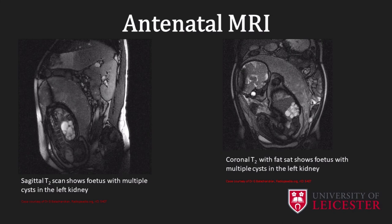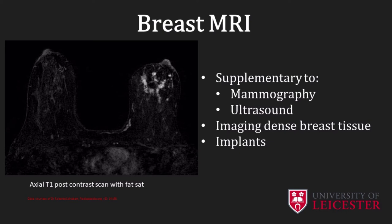Antenatal MRI can be carried out. T2 weighted sagittal and coronal images in this slide clearly show multiple cysts in the left fetal kidney. MRI scans of the breast can be acquired to provide supplementary information to mammography and ultrasound. MRI is highly sensitive for detection of breast cancer with moderate specificity. Evolving methods including multi-parametric MRI scanning are improving sensitivity and specificity in breast cancer detection to provide improved information for lesion morphology and function. MRI is also used for imaging implant ruptures and imaging dense breast tissue in younger women, particularly in cases with negative mammography cancer detection.